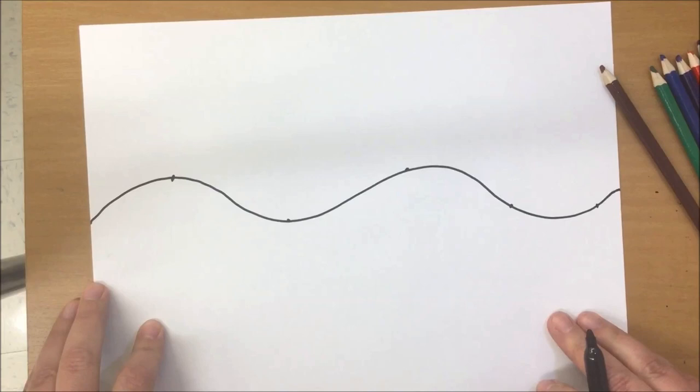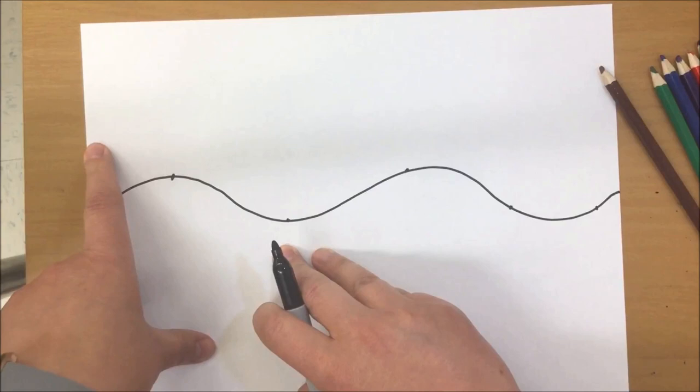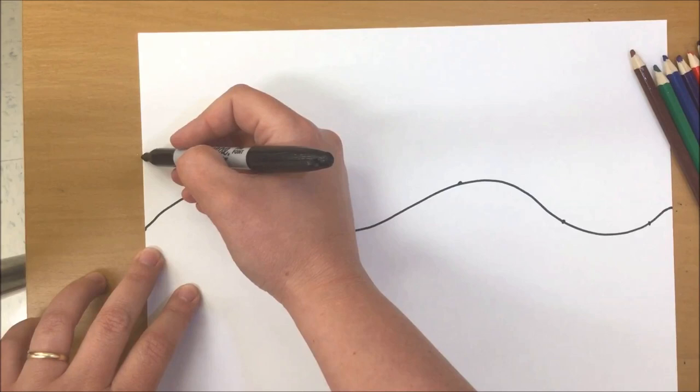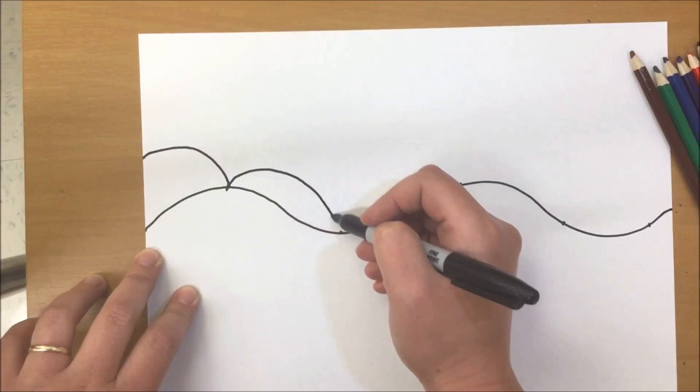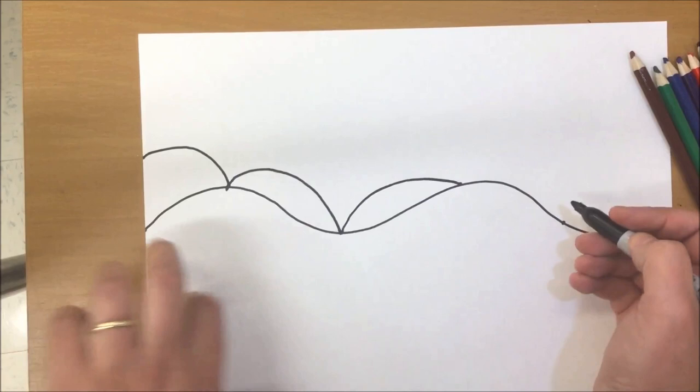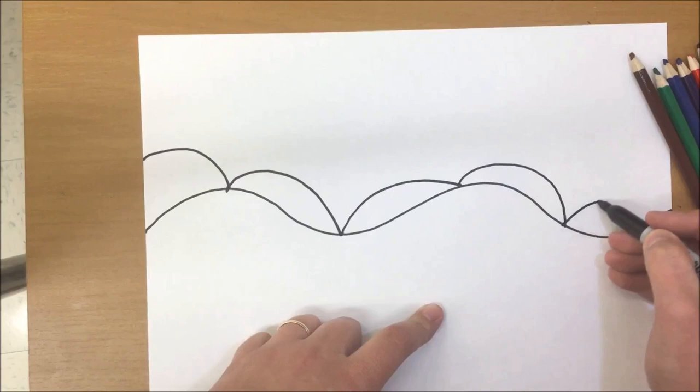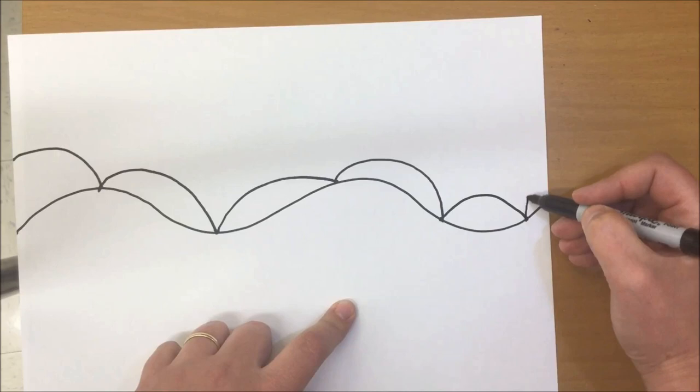For the first worm tunnel, we're going to start off the page. We're going to go to the top of the side of the page here and make a curved line that goes to that dot. We're going to keep going, almost like a ball bouncing from dot to dot. And then this last dot is going to come off the page.